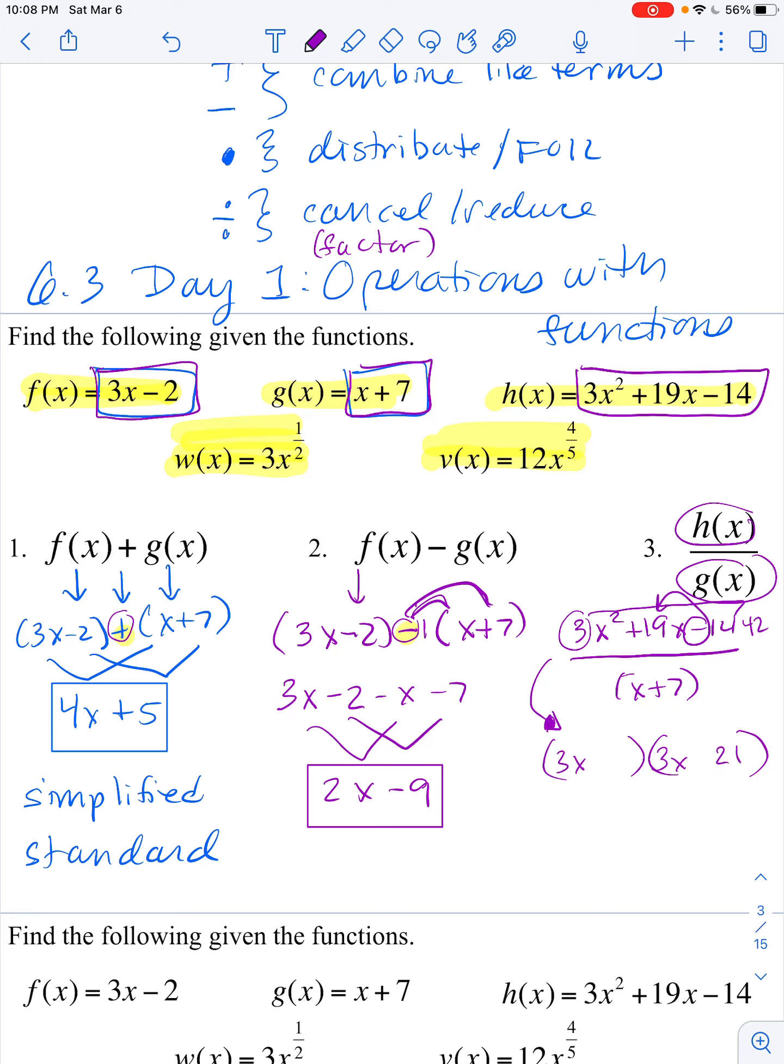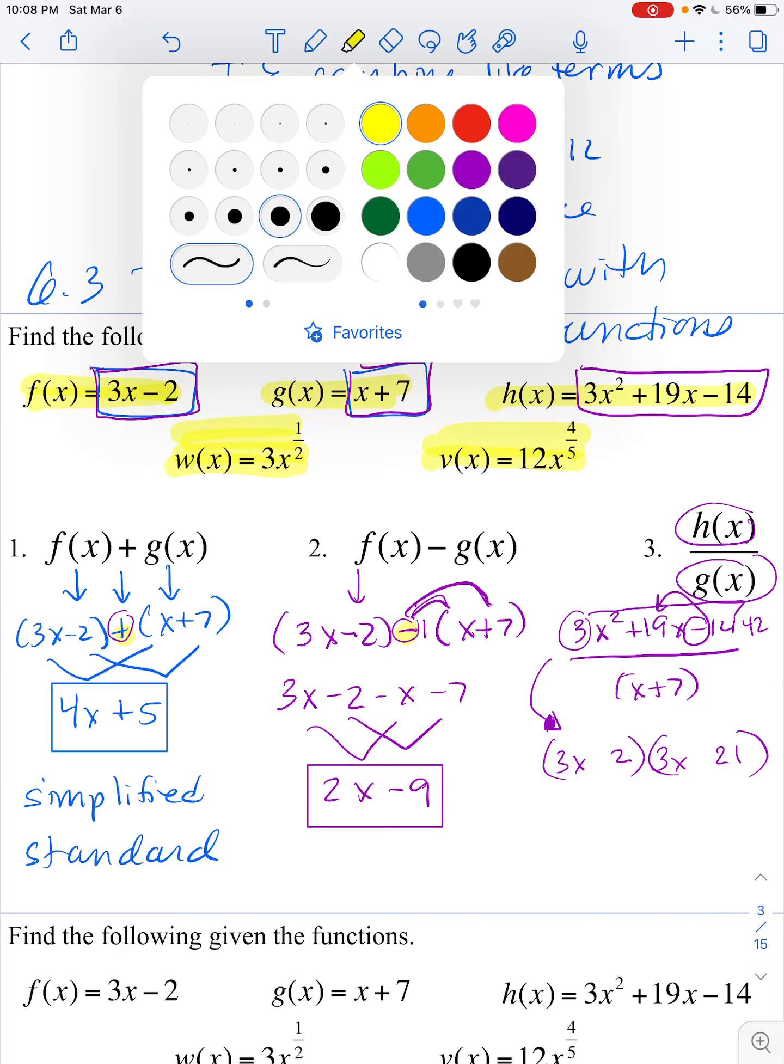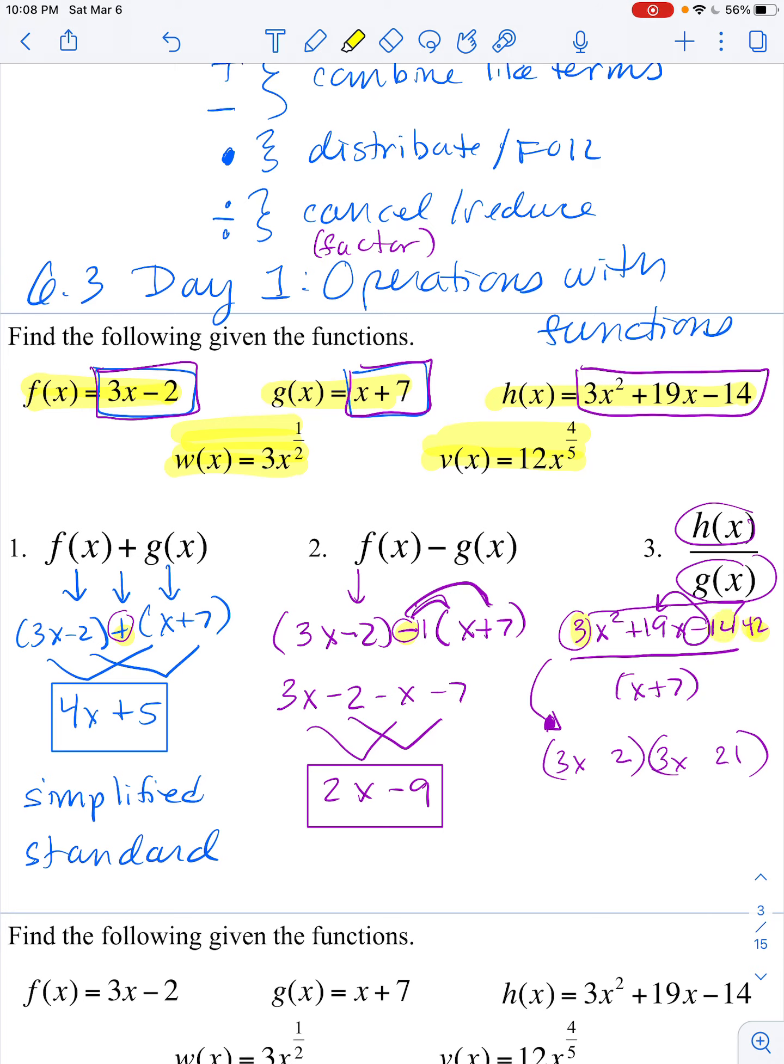I need to split the number 42 in a way that subtracts to be 19. So I'd have a 21 and then times 2. That would give me the 42 that I needed, which is the product of 3 times 14. And then I need it to subtract to be 19. So to get a positive 19, I would need a positive 21 and a negative 2.